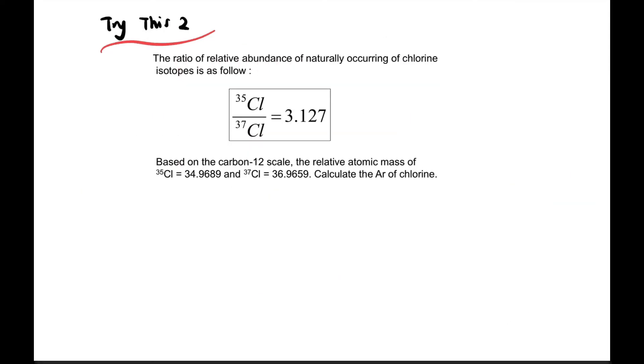Now let's try this question. The ratio of relative abundance of naturally occurring chlorine isotopes is as follows: Cl-35 to Cl-37 is 3.127 to 1. That's the abundance ratio. Based on the carbon-12 scale, the relative atomic mass of Cl-35 is given and Cl-37 is given. Before we calculate Ar, we need to understand this ratio.